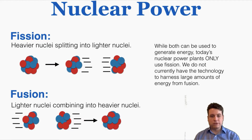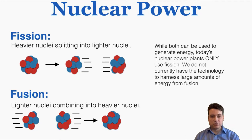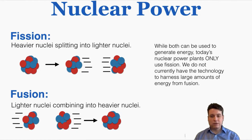We have to get through some definitions first. You have to know what fission and fusion are and the difference between them. Fission of atoms means heavier nuclei splitting into lighter nuclei, whereas fusion is lighter nuclei combining into heavier nuclei. While both can be used to generate energy, today's nuclear power plants only use fission.